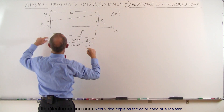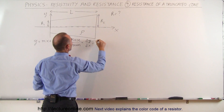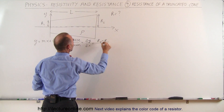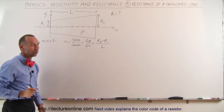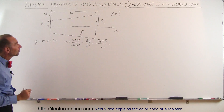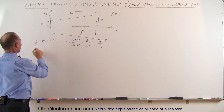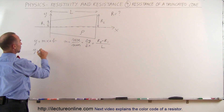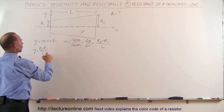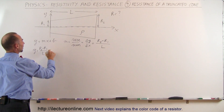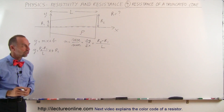How much does y change? Well, y changes from R2 to R1, so it would be R2 minus R1 — that would be the change in y — and the change in x is simply the length of the truncated cone. Then we can plug in the equation: y is equal to (R2 minus R1) over L, that would be the slope, times x plus R1, which would be the y-intercept.